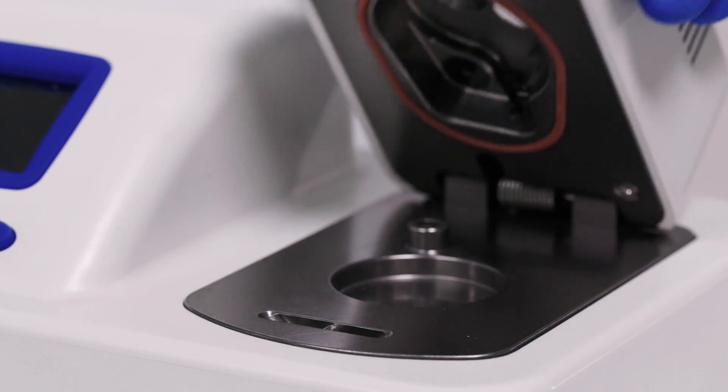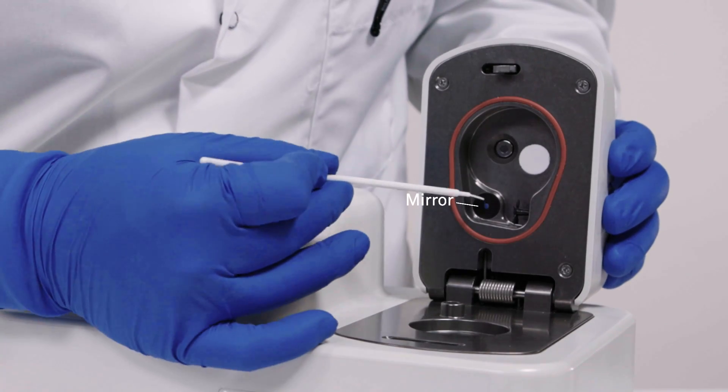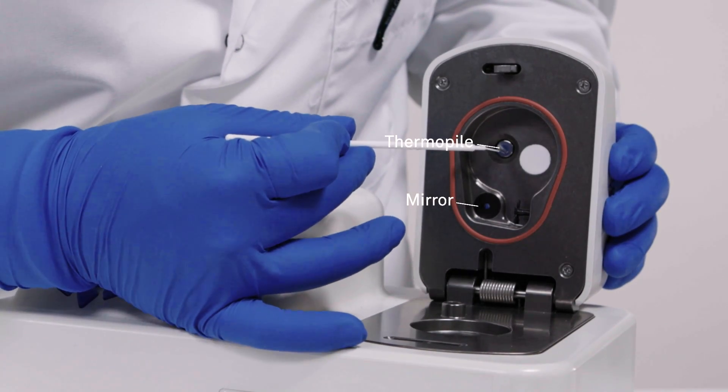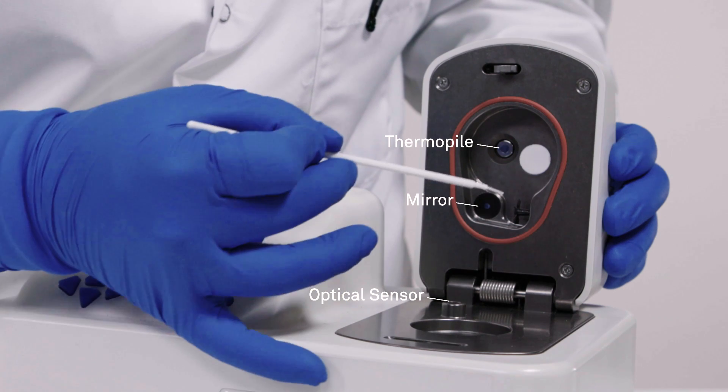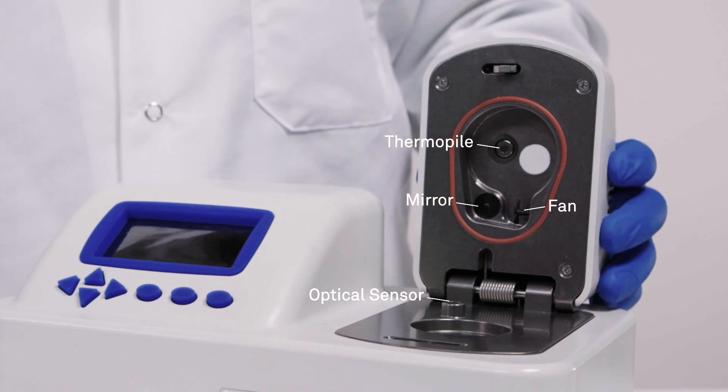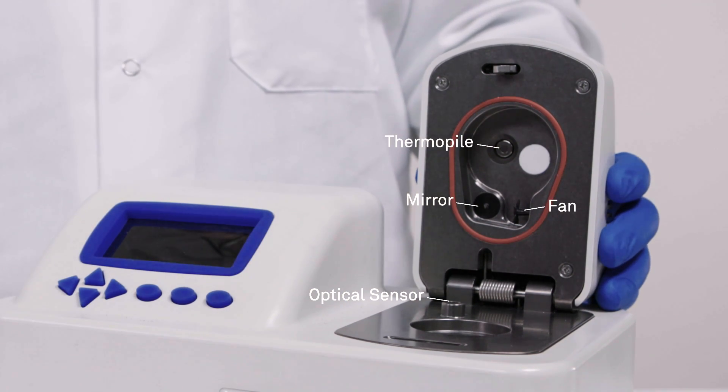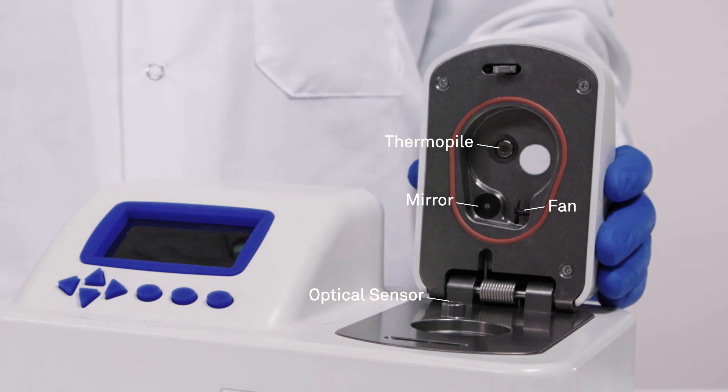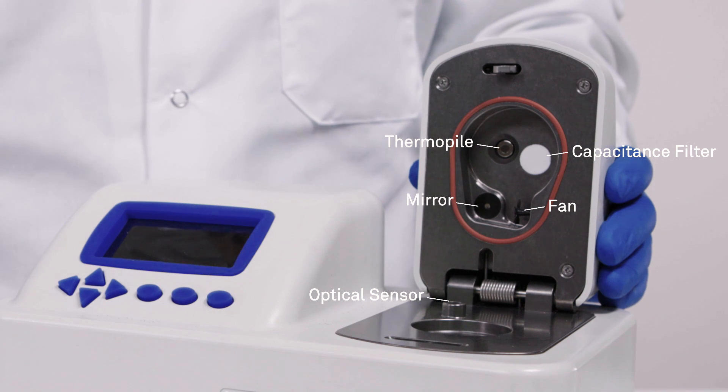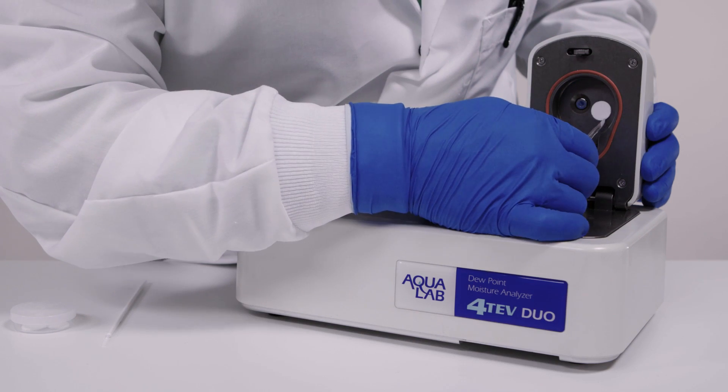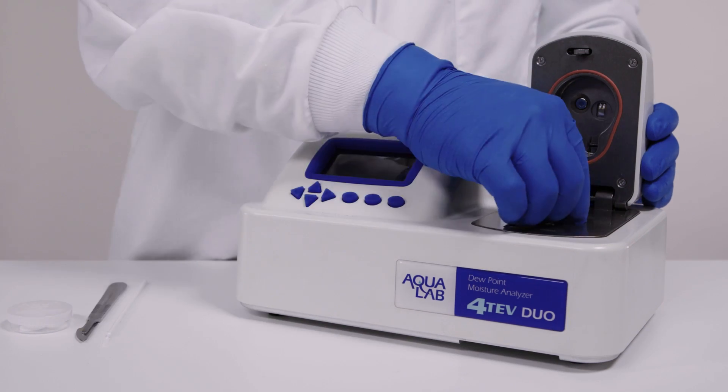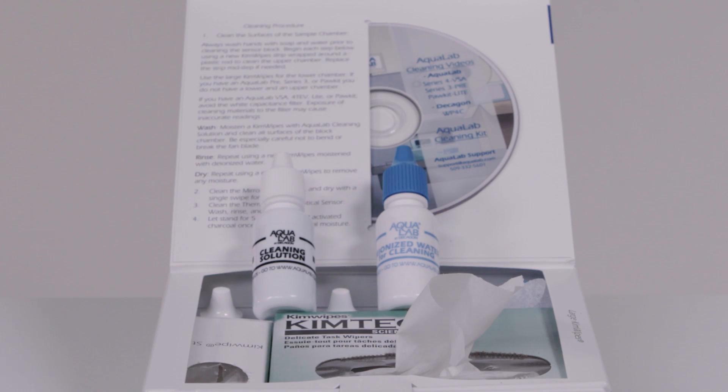Open the lid to the sample chamber. You should see the mirror, the thermopile, the optical sensor, and the fan. The Aqualab 4-TEV, vapor sorption analyzer, pocket, and light also have capacitance filters. You should not clean or allow any moisture to come into contact with the white filter covering the capacitance sensor. If the filter has been contaminated, it needs to be replaced. Replacement filters are included in your cleaning kit.